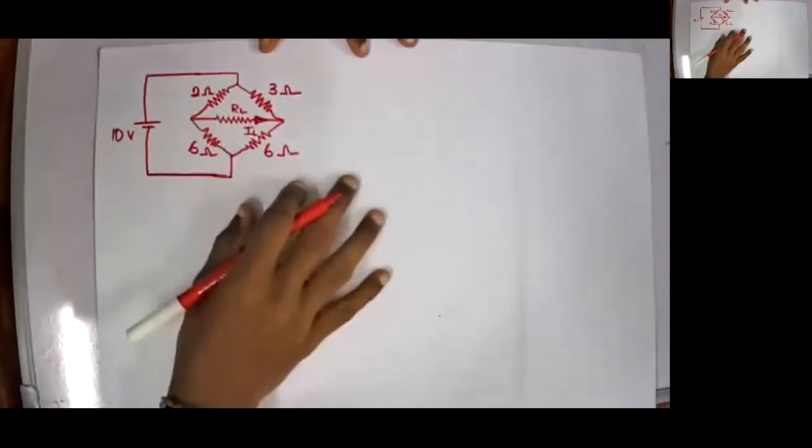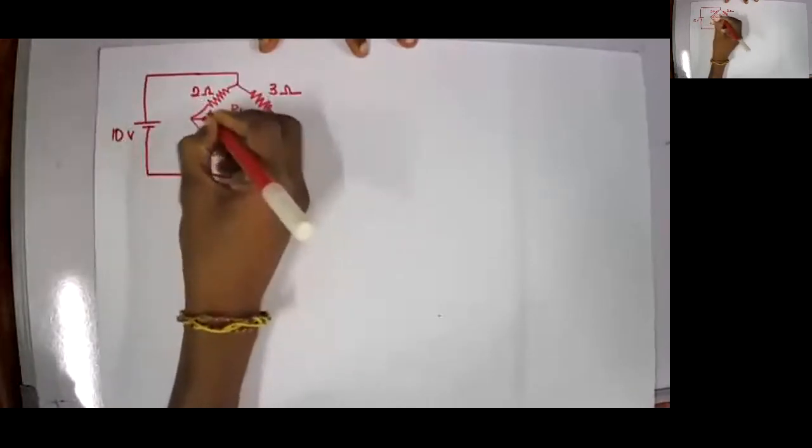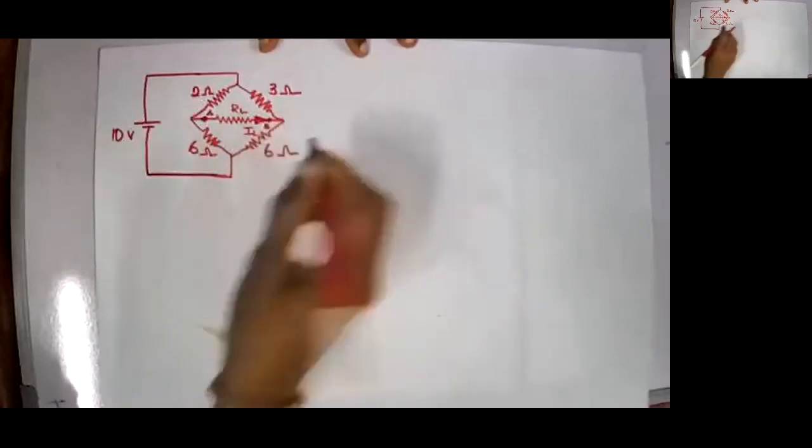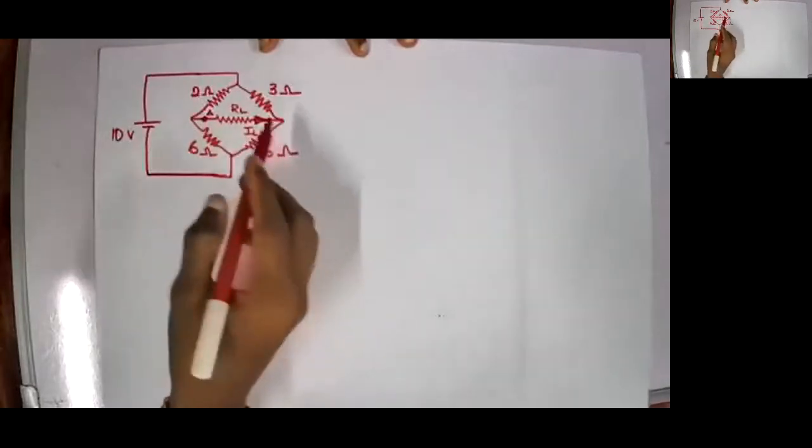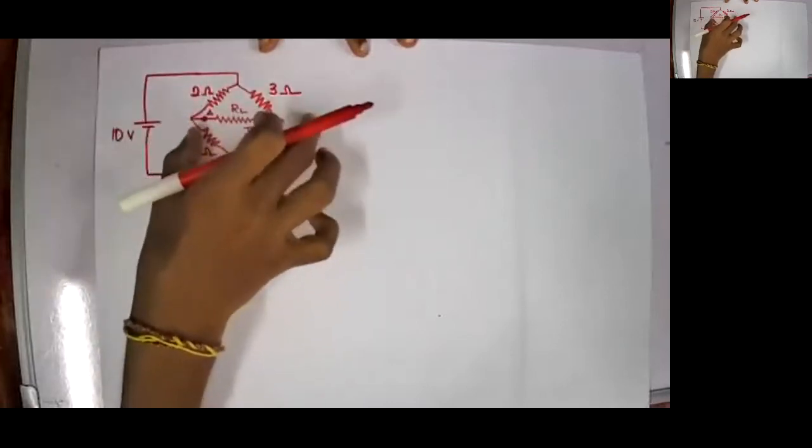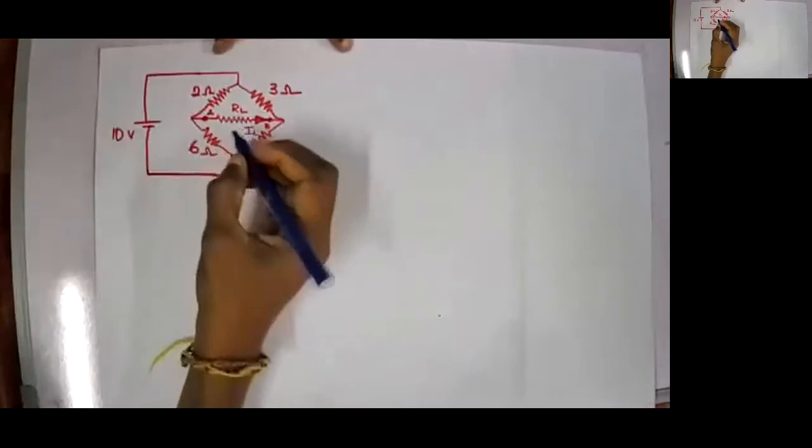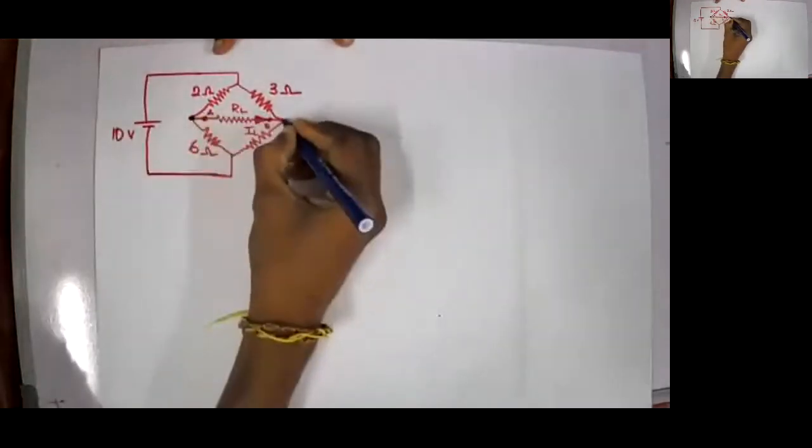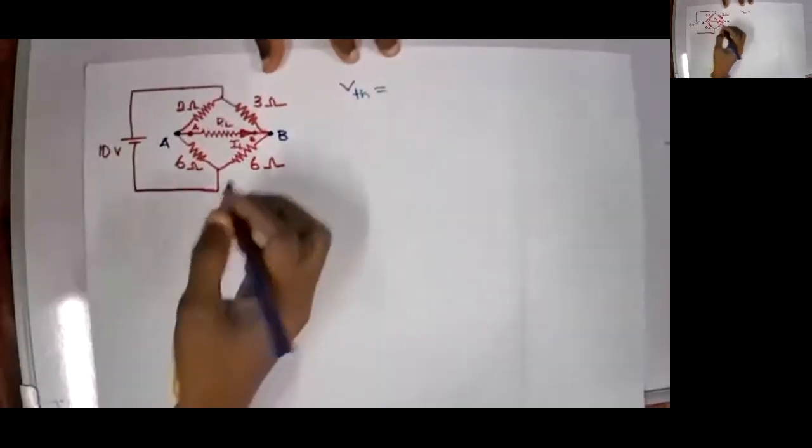So what now we can do is we need to calculate Vth. Let this be point A and this is my point B. So my Thevenin's voltage is the voltage across points A and B. And then what we need is the short circuit equivalent resistance across A and B. So we'll try to solve this. First of all let's calculate the voltages at point A and point B. So Vth, we need to calculate Vth which is Vab here in the figure.